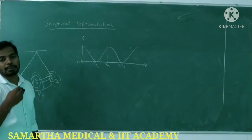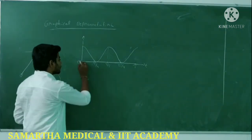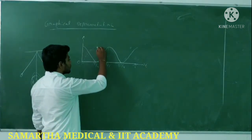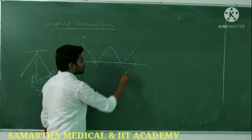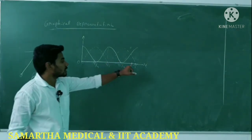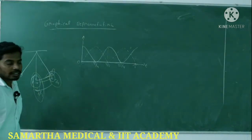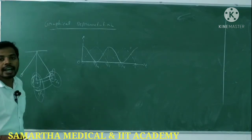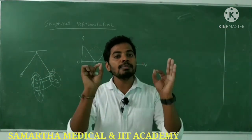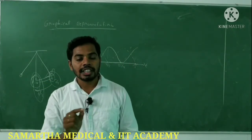For potential energy: it is 0 at mean position (t = 0) and maximum at extreme position (t = T/4). At t = T/2, back at mean position, potential energy is again 0. The total energy is always constant at every time interval and every position — it is always maximum, represented as a straight horizontal line.